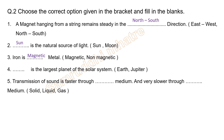Fourth blank: dash is the largest planet in the solar system. Options: Earth or Jupiter. Jupiter is the largest planet of the solar system.